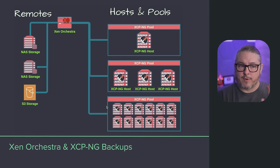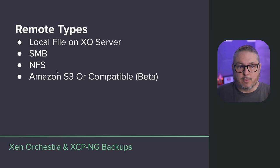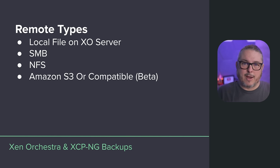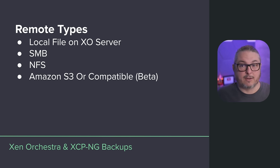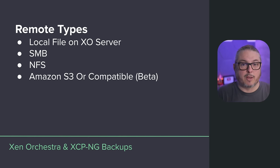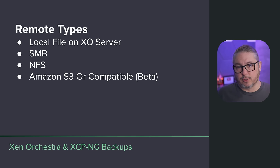Remotes are all the different storage destinations set up for your backups to land on. The remote options are: local file on the XO server itself (useful if you've set up external storage mounts there), SMB — works with TrueNAS, Synology, or similar — NFS, also tested with TrueNAS and Synology, and Amazon S3 or S3-compatible storage such as MinIO, which is a beta feature.